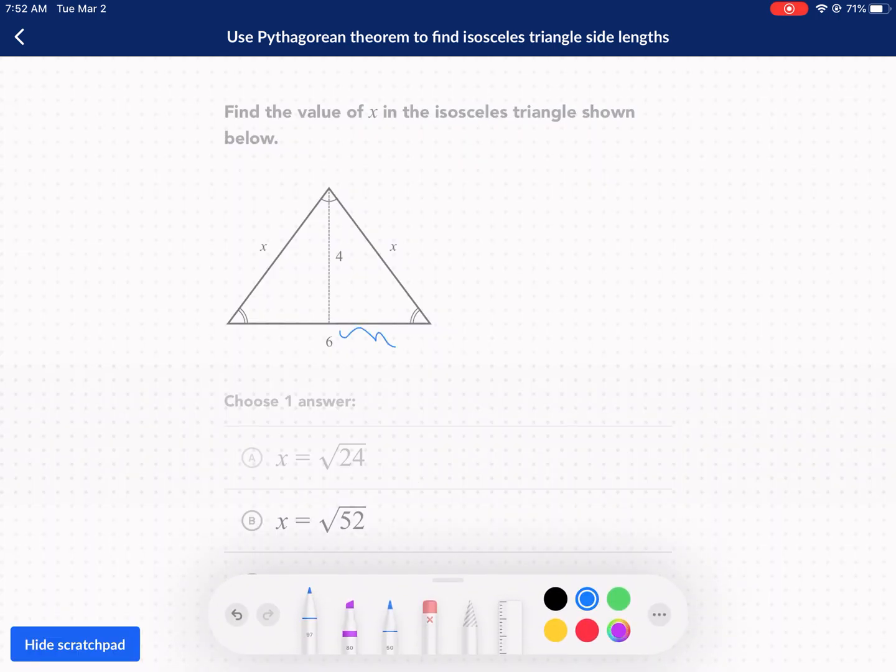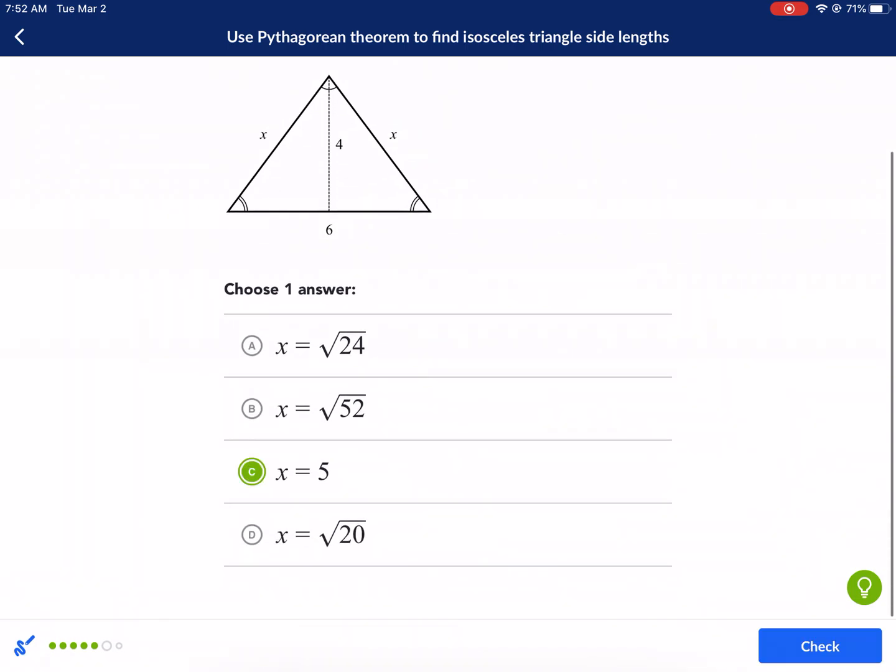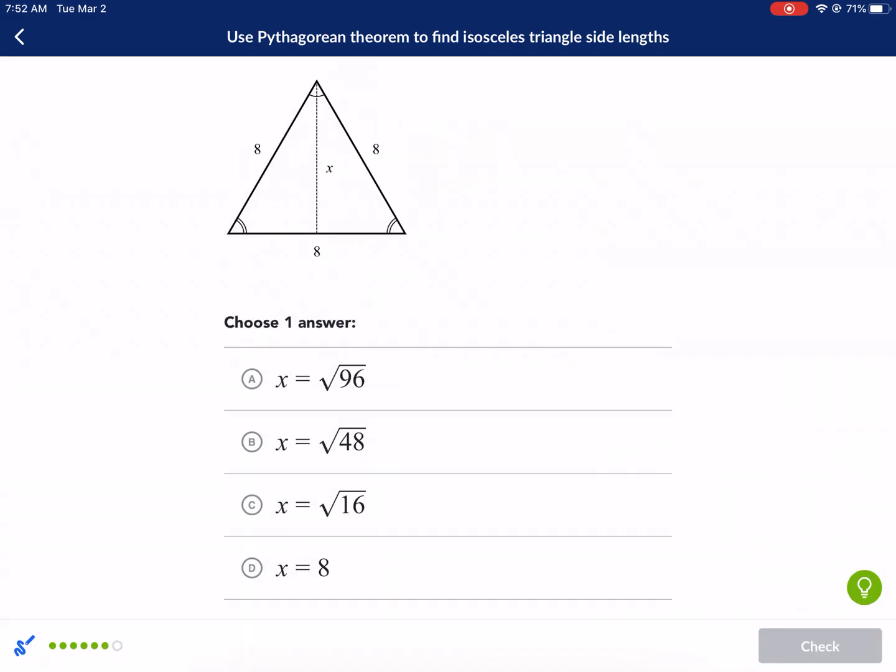This one is 3. I already know this is one of our 3, 4, 5 automatic triangle families. We have 9 plus 16 equals c squared. That's 25 equals c squared. C equals 5. Like I said, equals 5. Make sure you learn there are 3, 4, 5 triangle families. Next question. This is the last one.